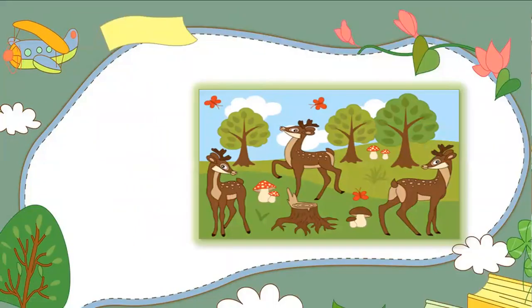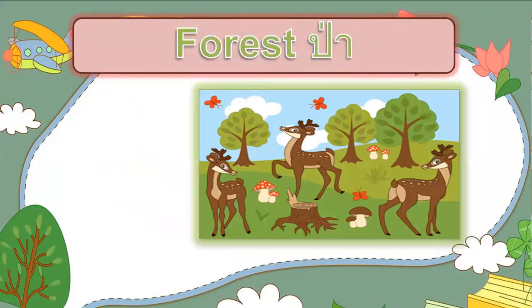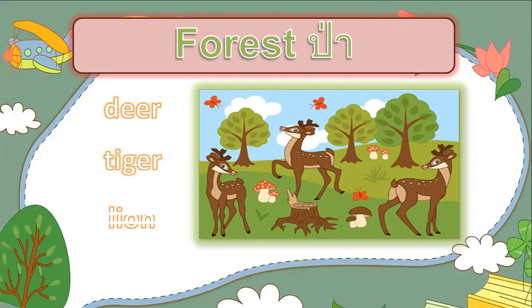How about deer? What is the habitat of deer? In the forest. Other animals that live in the forest are deer, tiger, and lion — and there are more animals. Their habitat is forest.